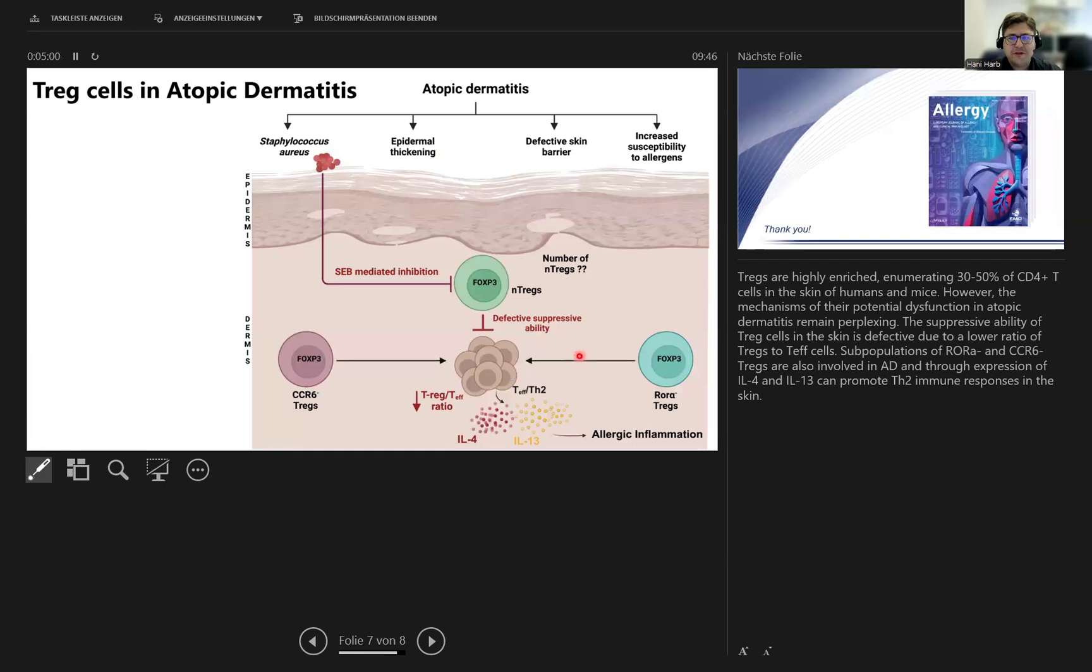As for atopic dermatitis, T-reg cells are highly enriched, making almost 30-50% of CD4 cells in the skin of humans and mice. However, the mechanisms remain perplexing. The suppressive ability for T-reg cells in the skin is very unique and usually it's defective due to a lower ratio of T-regs to T-effector cells.